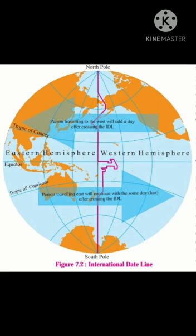And it is 2 hours behind Greenwich time at every 30 degree longitude to the west of Greenwich. When it is Sunday noon at Greenwich, it is just the beginning of Sunday to the east of the 180 degree meridian, while Sunday is almost over in the west of the 180 degree meridian. Thus, time to the east and west of the 180 degree meridian shows a difference of 24 hours.